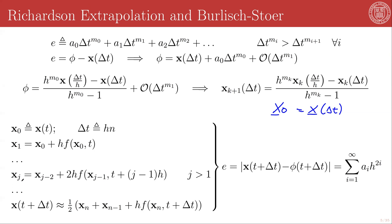such that in general, the jth iterant step is equal to x_{j-2} + 2h·f(x_{j-1}, t+(j-1)h), for some j that is greater than 1.